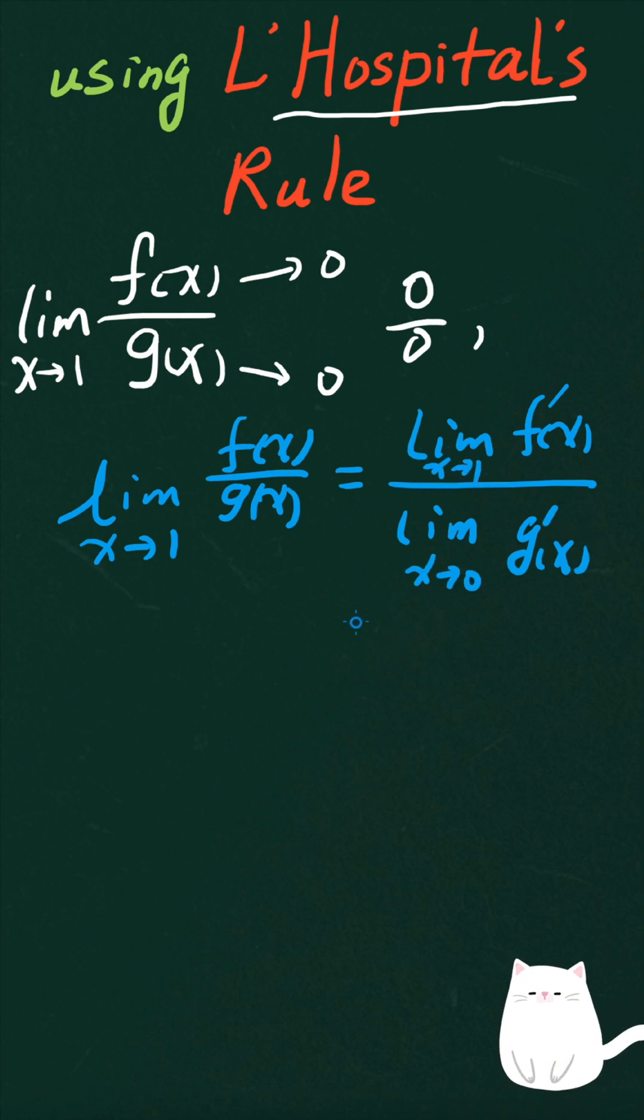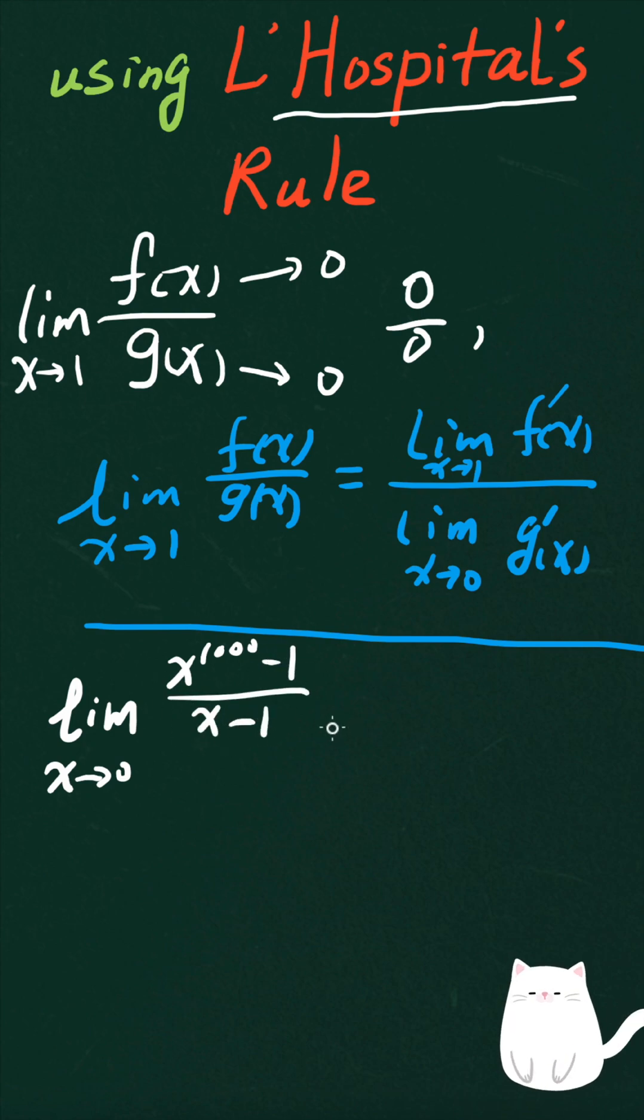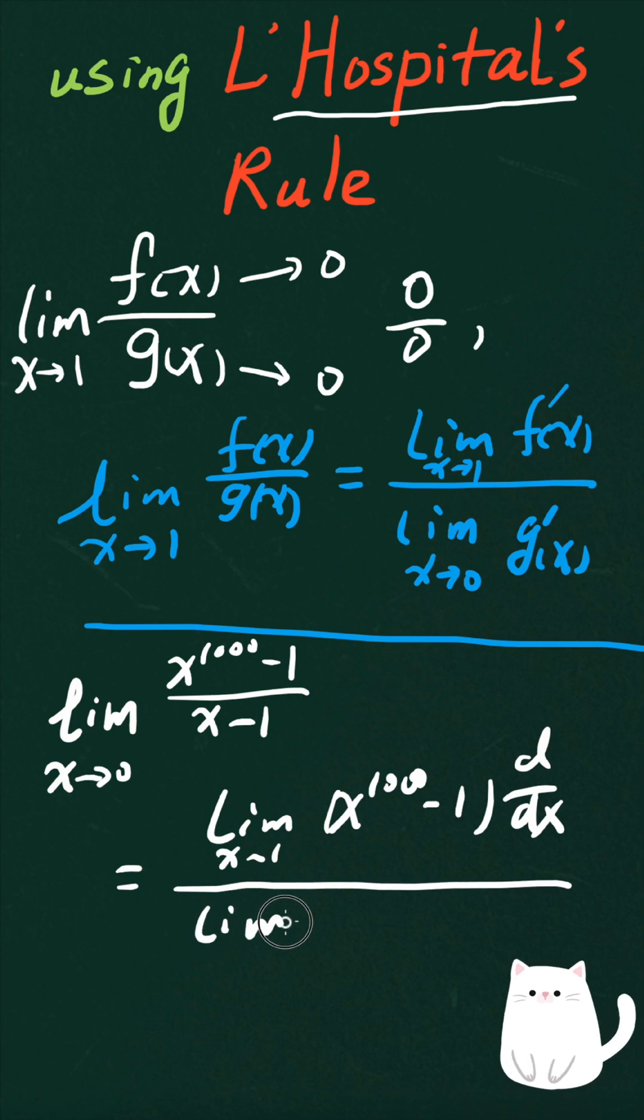All right, so then we can apply this formula to solve the problem. The original expression is the limit as x approaches 1 of x^1000 minus 1 divided by x minus 1, which equals the limit as x approaches 1 of the derivative of x^1000 minus 1 divided by the limit as x approaches 1 of the derivative of x minus 1.